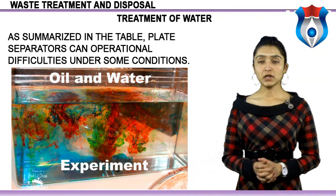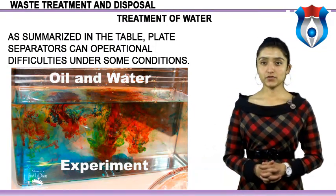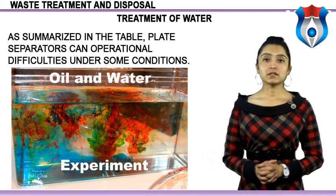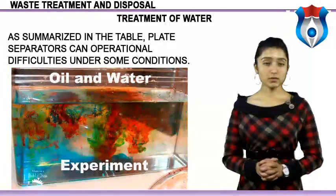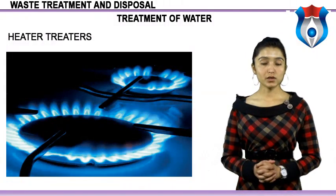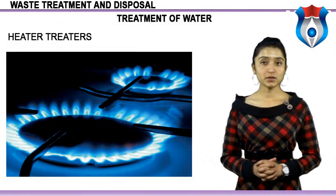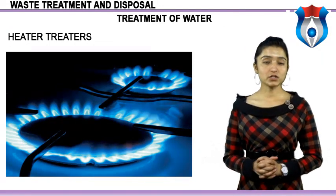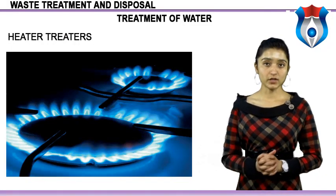Drop size is a critical parameter in the effectiveness of hydrocyclones in separating oil from water. A related way to enhance gravity separation is through a decanting centrifuge, where the produced water enters the spinning centrifuge and oil is separated from the water because of its lower density. Oil and water can also be separated by heating the mixture — heater treaters. The higher temperature lowers the fluid viscosity of the mixture and alters the interfacial tension between the phases, allowing the oil and water to separate faster.